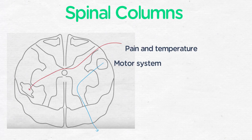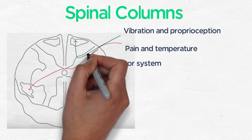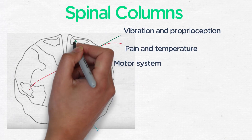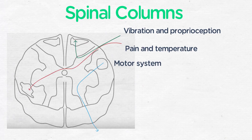The dorsal column controls vibration sense and proprioception, and it lies posteriorly in the cord. It ascends the spinal cord ipsilaterally and then decussates in the brain stem.